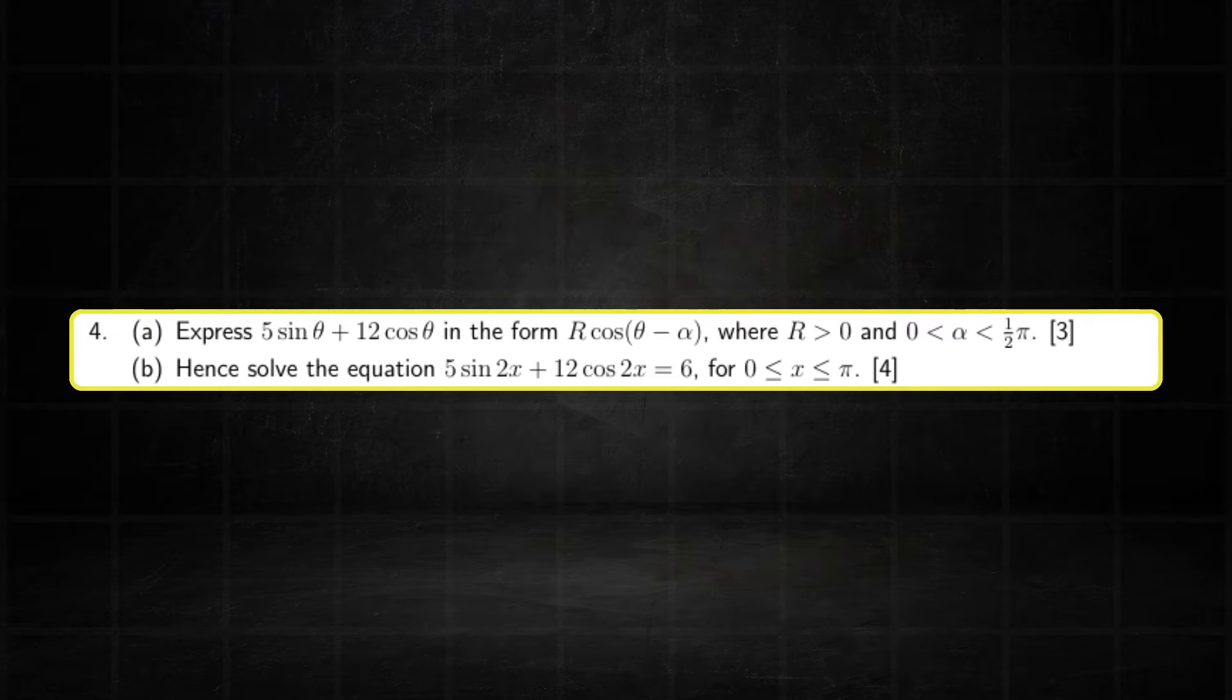Question 4 is a harmonic identity. This concept also came up in the February-March series, so I do suspect that it should come up again in the May-June series. Once you understand how to find R and alpha, this is usually a simple question.